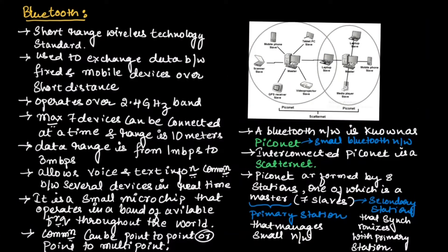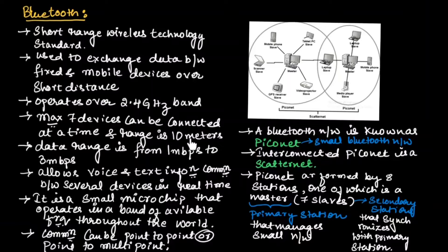Bluetooth is a short-range wireless technology standard used for short-range wireless communication. It is used to exchange data between fixed and mobile devices over short distances. Bluetooth operates over the 2.4 GHz frequency band. It can connect a maximum of 7 devices at a time, with a range of 10 meters.